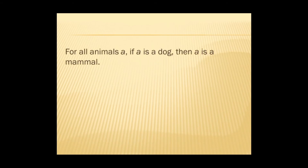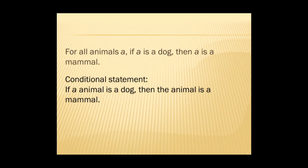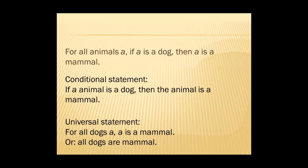Continuing the example: for all animals a, if a is a dog, then a is a mammal. To determine the conditional part, we identify the 'if' and 'then' words — if an animal is a dog, then the animal is a mammal. For the universal statement, the phrase 'for all' signals universality. So we can write: for all dogs a, a is a mammal. Or simply: all dogs are mammals.